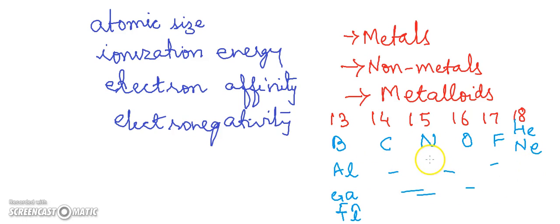So, we have a combination of metals, non-metals and metalloids in the P block elements.